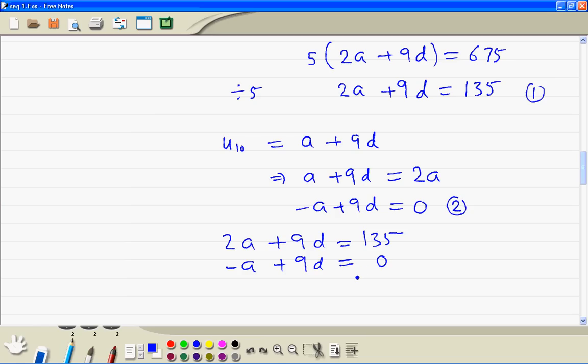So we can eliminate a or d first. If we minus the bottom equation from the top, we get 2a minus minus a equals 3a. 9d minus 9d equals 0. That's 135.